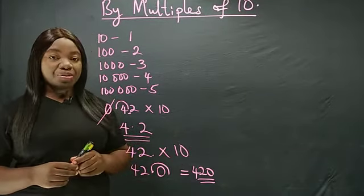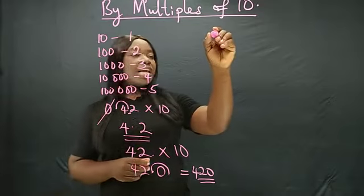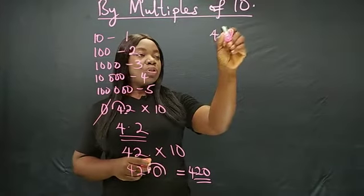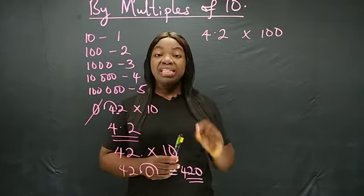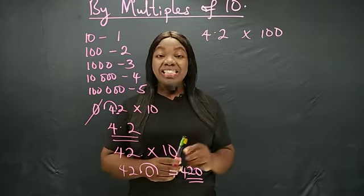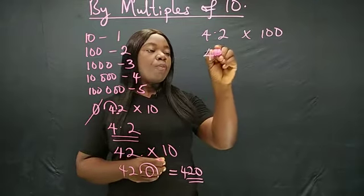And we have more examples right now. So what is 4.2 times 100? What is 4.2 times 100? Still counting at the decimal point. So this is 4.2.